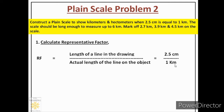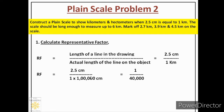Putting these values in the formula: 2.5 centimeters divided by 1 kilometer. Next, we convert kilometers into centimeters by multiplying by 10 to the power 5. The centimeter units cancel out and we get the answer as 1 by 40,000. So RF is 1 by 40,000, meaning we have reduced the size of the drawing by 40,000 times — we are representing 1 kilometer by only 2.5 centimeters.